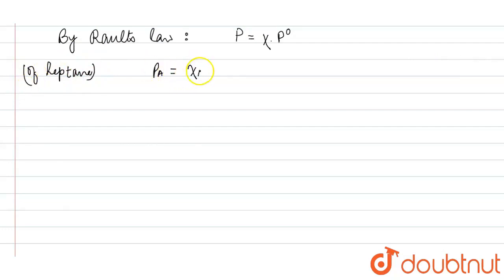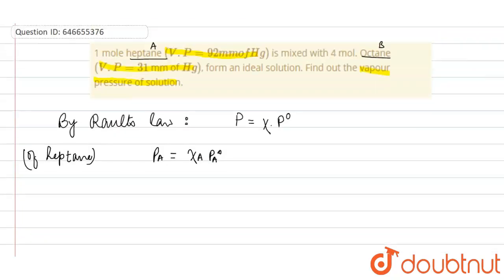For PA, that is of heptane, PA is equals to XA into PA naught. What is the value of PA naught? See in the question, value of PA naught given is 92 mm of Hg, and for B, value of PB naught is 31 mm of Hg. So we will write here the given information: PA naught is equals to 92 mm of Hg, and PB naught is 31 mm of Hg.